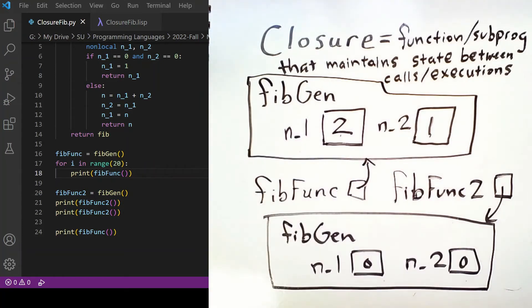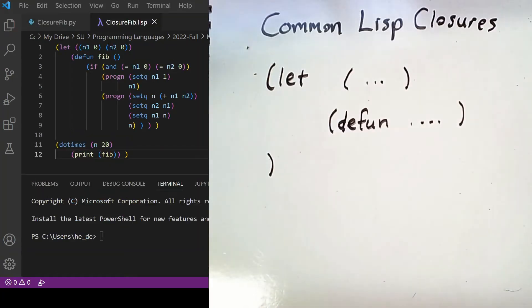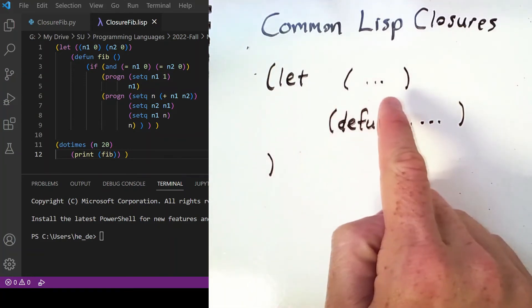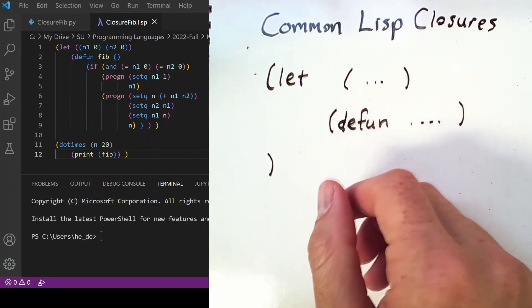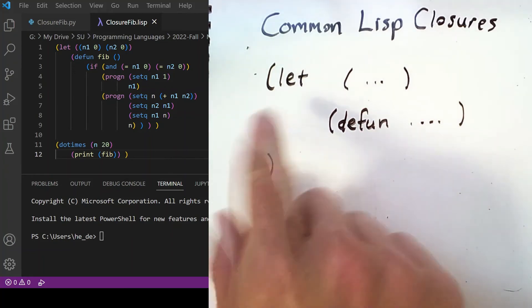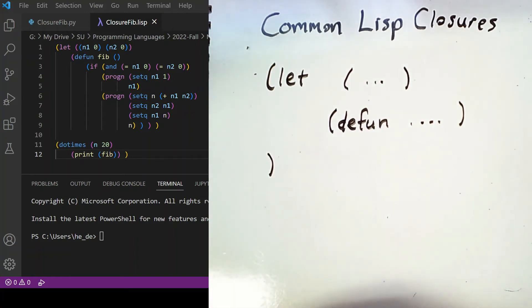But the variables are distinct. Common Lisp features closures as well. What you do is you use a let construct to define the variables that will be part of the state, and then you define a function or functions inside of that let scope, and then you can call those functions.